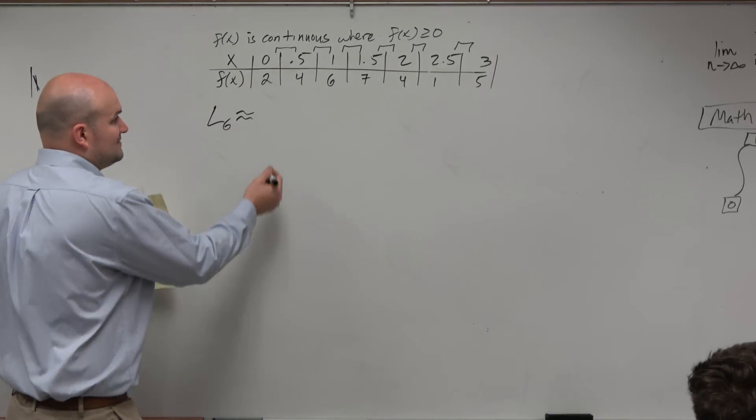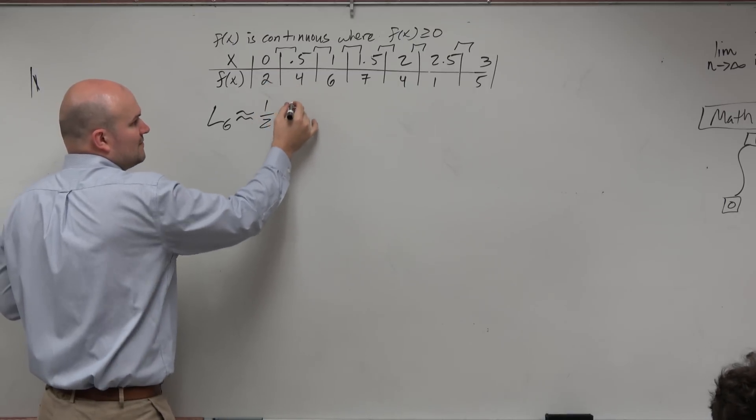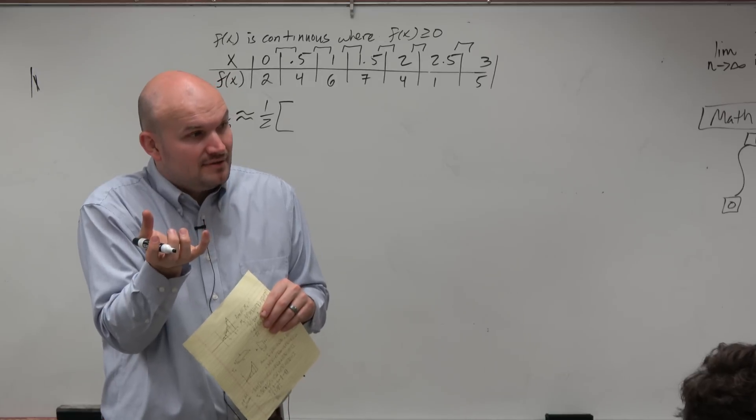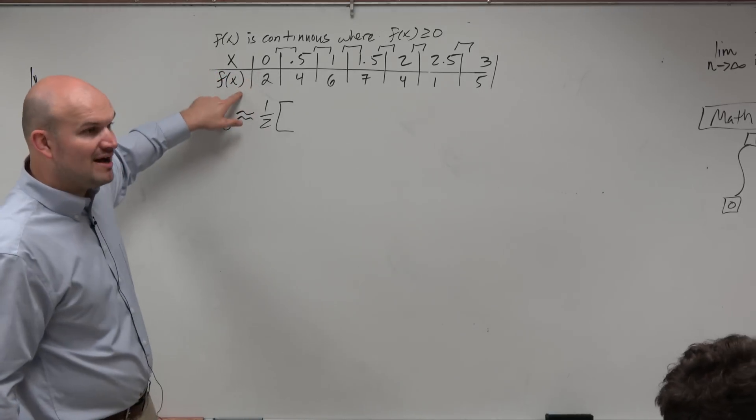So now again, the left interval, so our constant is going to be 0.5, which is the same thing as 1 half. Now, again, we're just doing length times width, right? So the width is 1 half, or the base is 1 half, and the height is just going to be the y value.